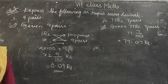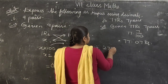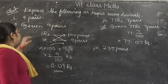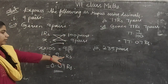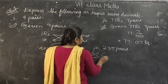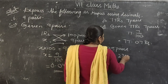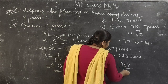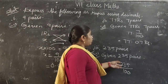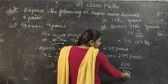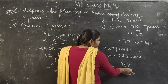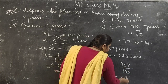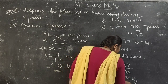Third one: 235 paisa. We convert to rupees. In the same way, 235 paisa can be written as 235 by 100. In the denominator we have two zeros, so after two digits we keep the point. That will be 2.35 rupees.